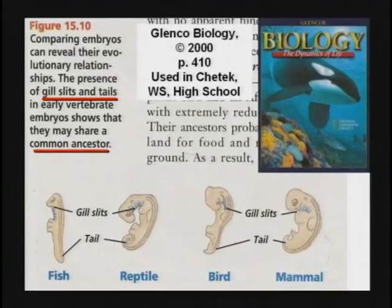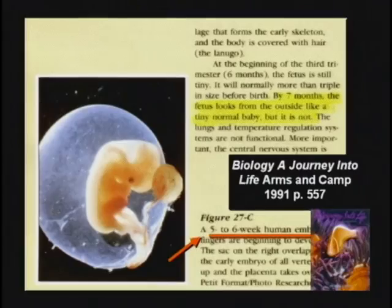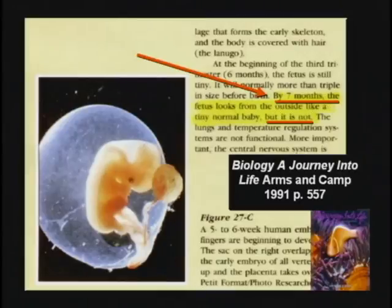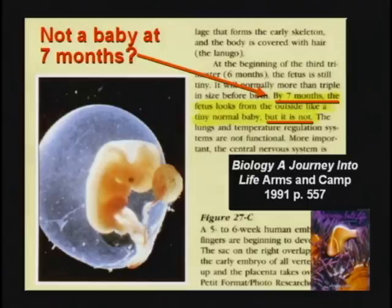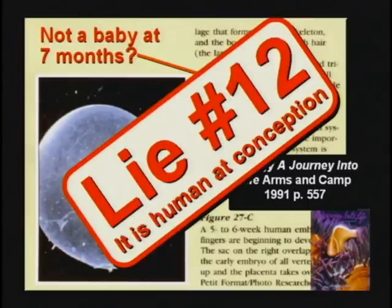Why would they keep this in the textbooks 130 years after it has been proven wrong? There's only one answer I can come up with — I'll tell you in a minute. This one shows a five-to-six-week embryo and says by seven months the fetus looks from the outside like a tiny normal baby. But it's not a baby at seven months? That's a lie. It's a human at conception.